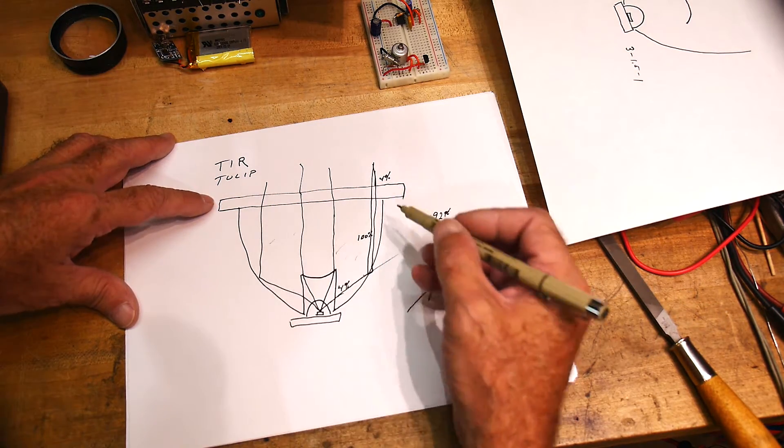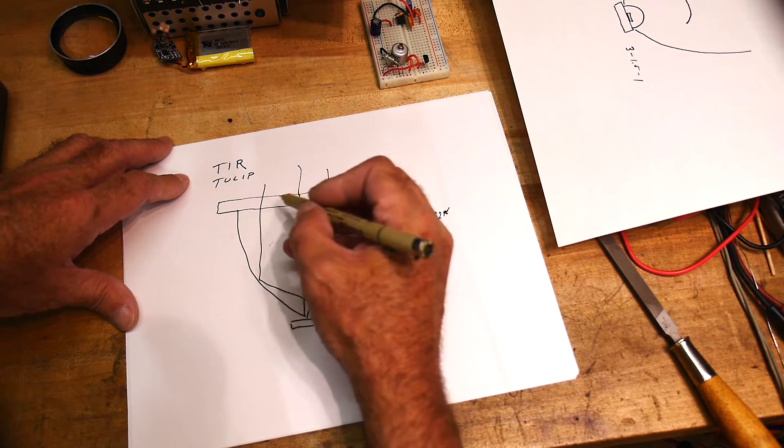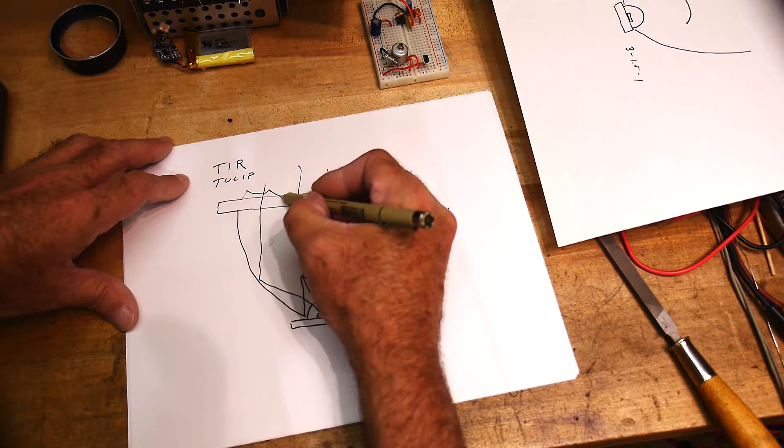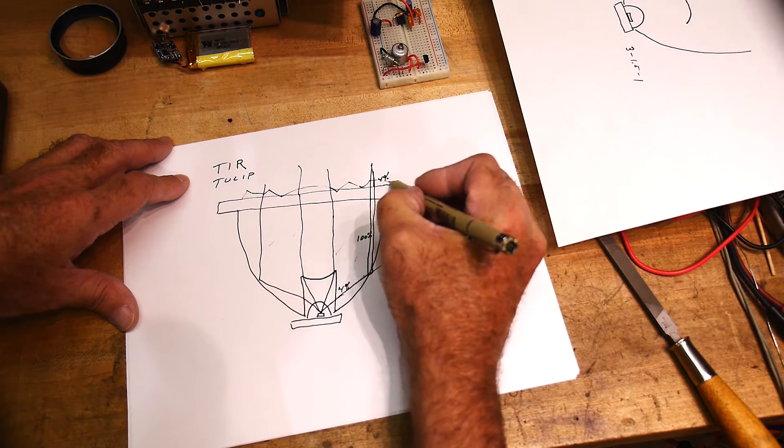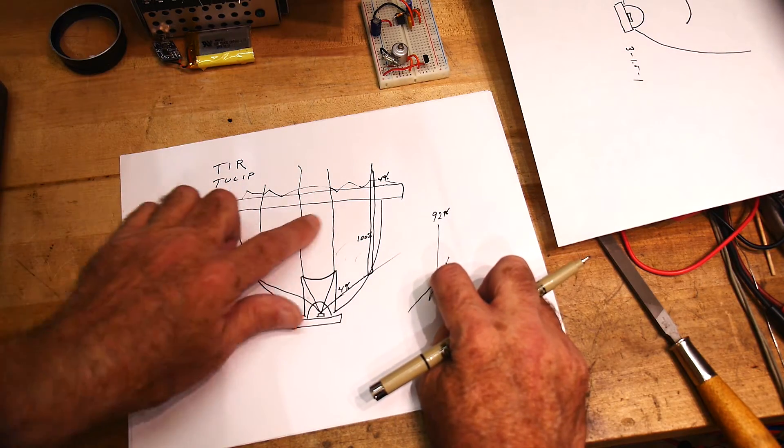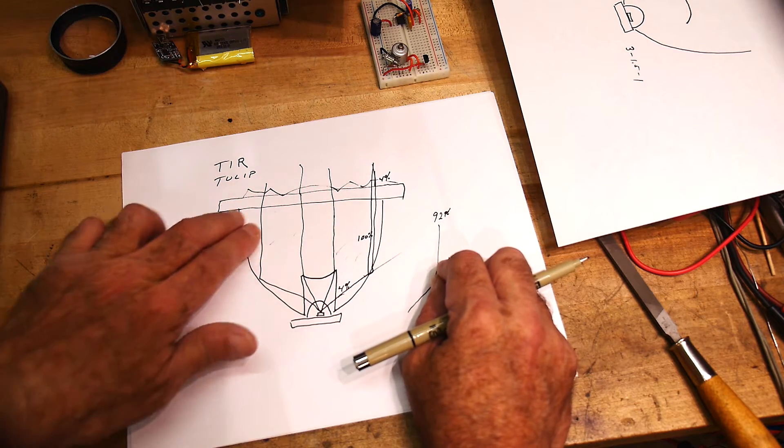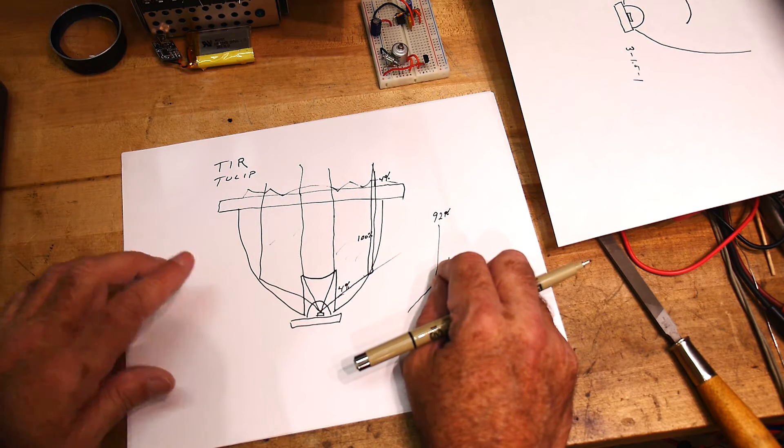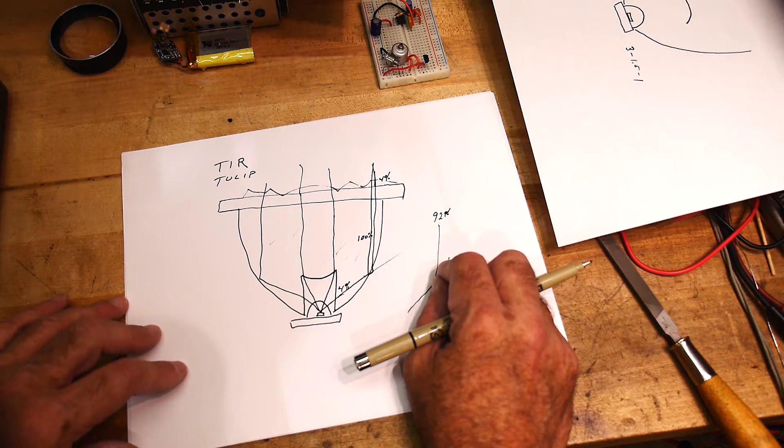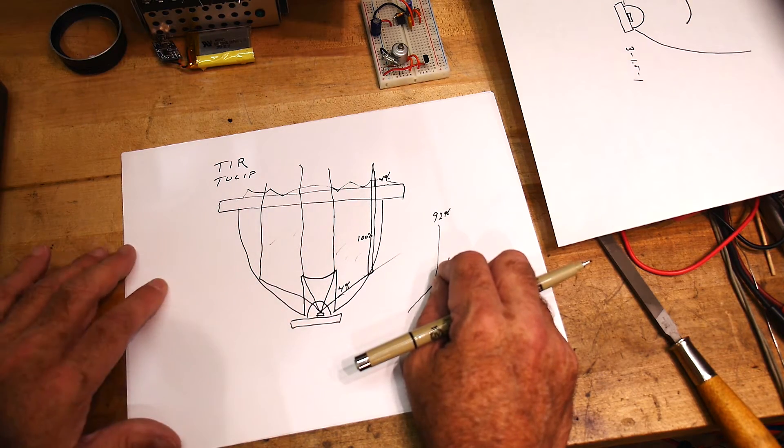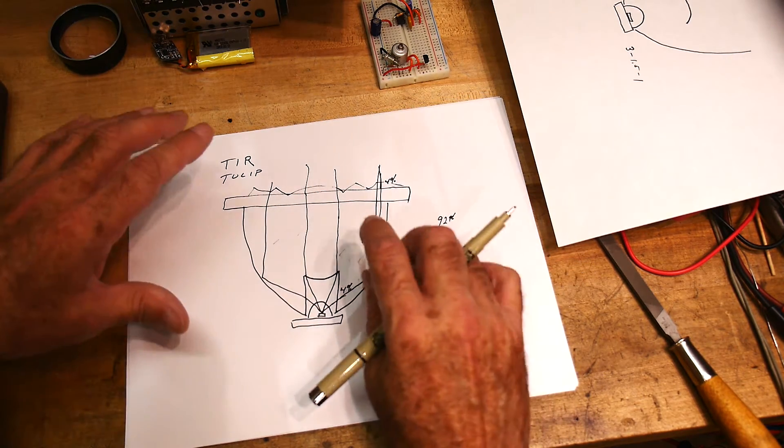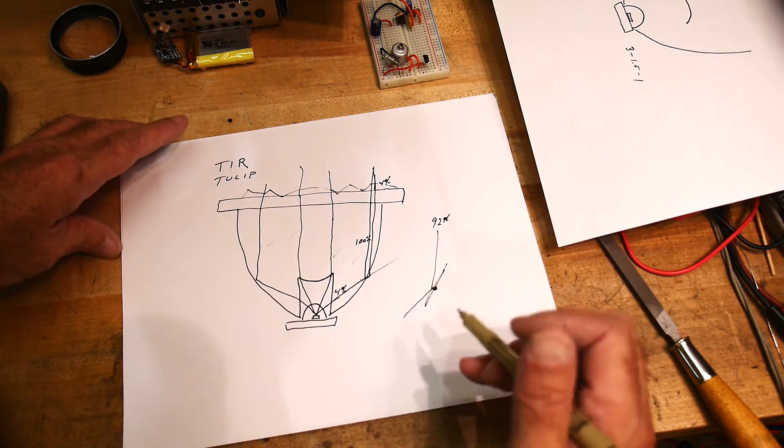You can also start putting structures on top of the tulip lens. You can start putting maybe a Fresnel lens on top of the tulip or the TIR lens and shape it a little bit more. A lot of clever things like this. If you have a cell phone, stare at the little LED in your cell phone, and you'll see optics that are similar to this—not exactly the same, but similar to this. I've designed those.